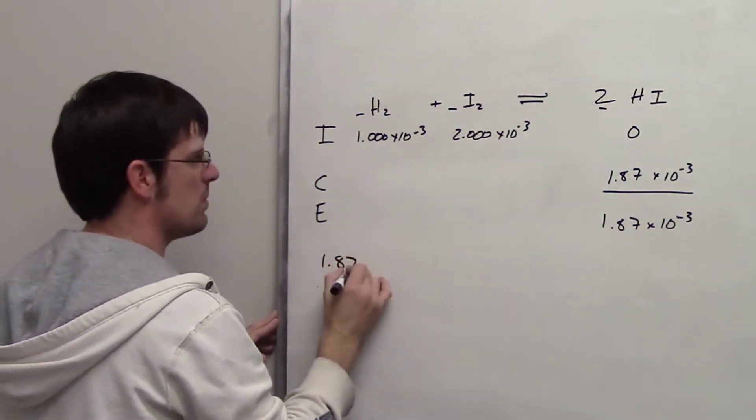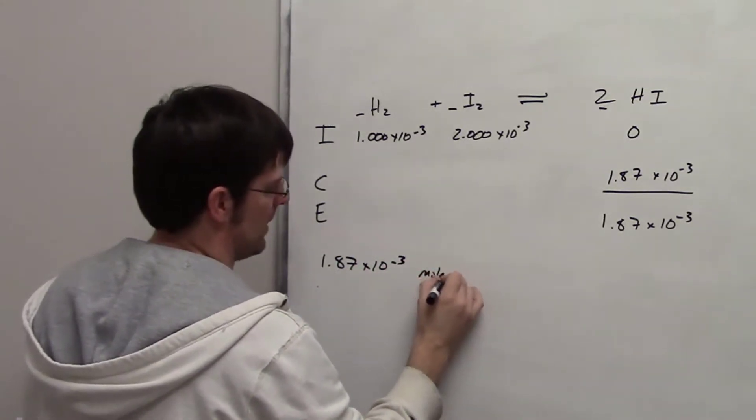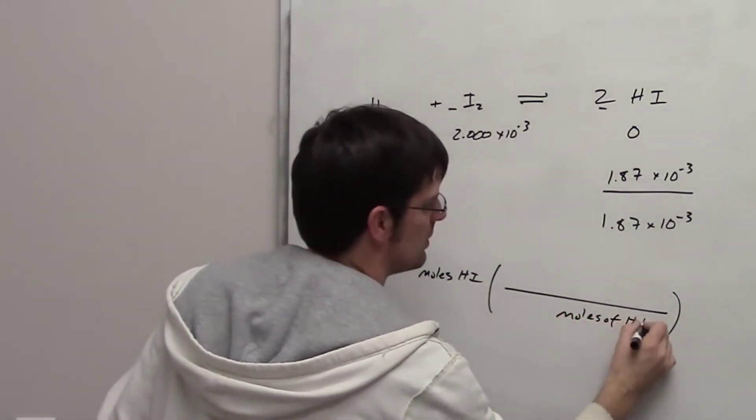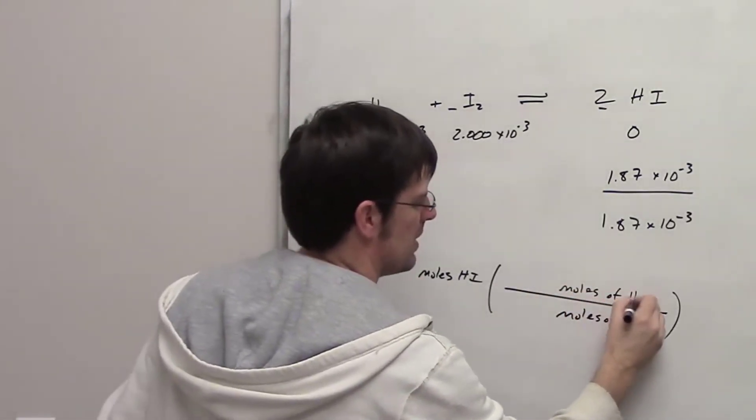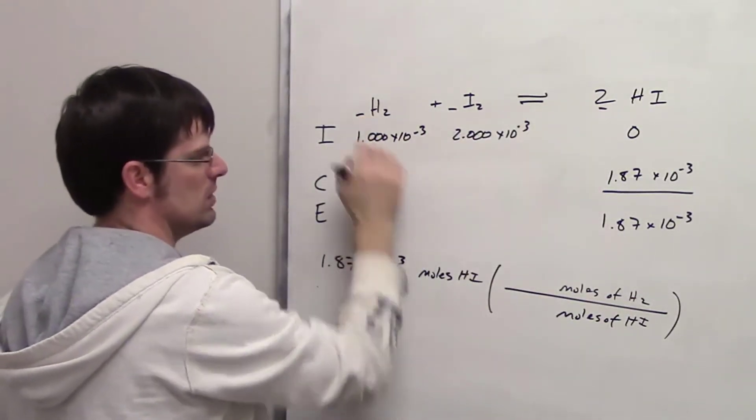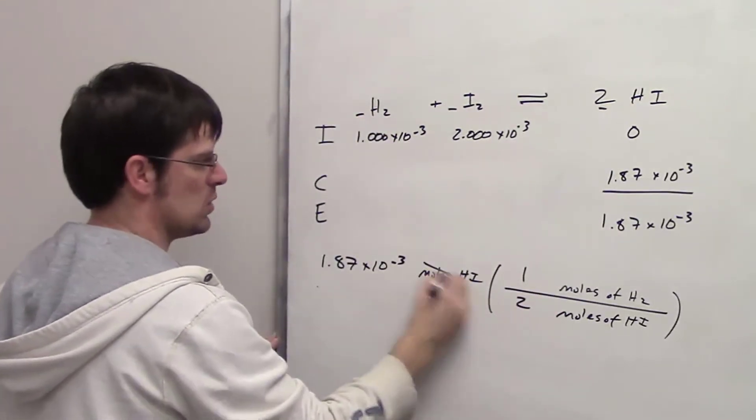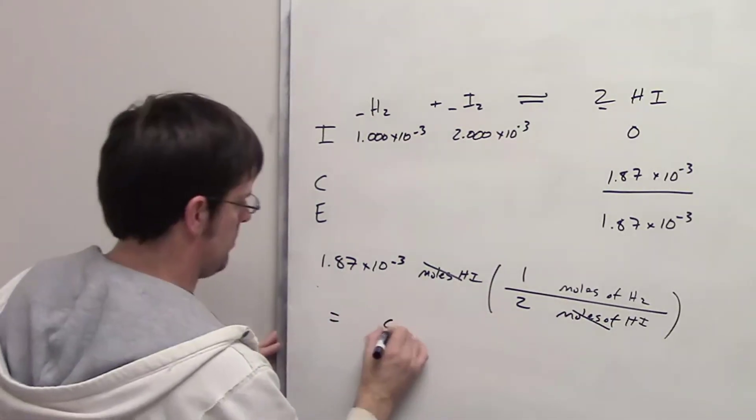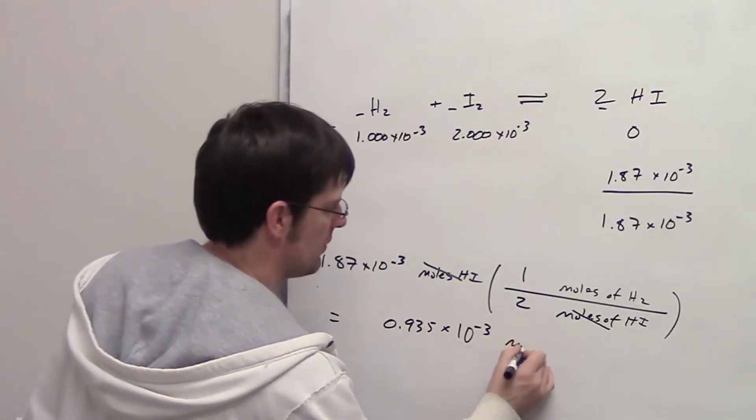I'll write that down here. So 1.87 times 10 to the negative third moles of HI, and I'll go ahead and write moles of HI. I'll go ahead and write moles of HI in the denominator, and I'm going to start with my moles of H2, moles of H2. Now I just look at the balanced stoichiometric equation. How many moles of HI are there for each mole of H2? I've got one mole of H2 for every two moles of HI. The moles of HI cancel each other out, and that ends up giving me a final answer of 0.935 times 10 to the negative third moles of H2.